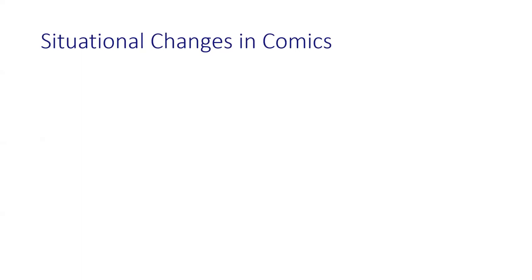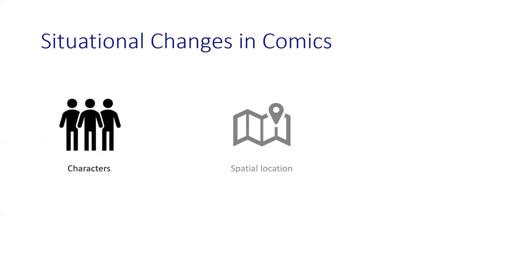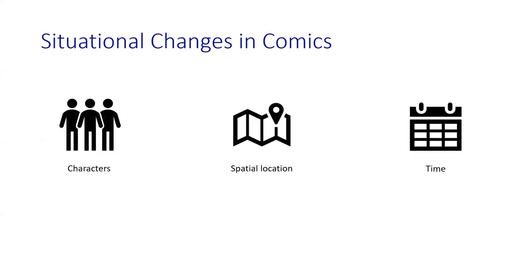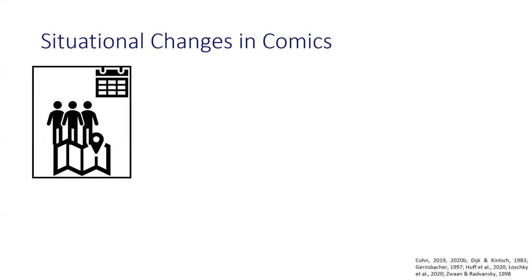So first, situational changes in comics. When we're reading narratives, also visual narratives, readers track certain bits of information, like characters, spatial location and time. There are, of course, more situational dimensions, but these three are the main ones we've selected for this study. These also co-occur within a panel, often showing characters within a certain location at a certain moment in the story.